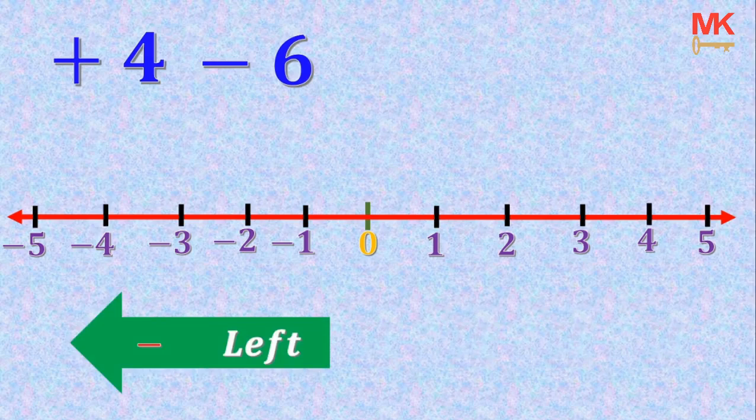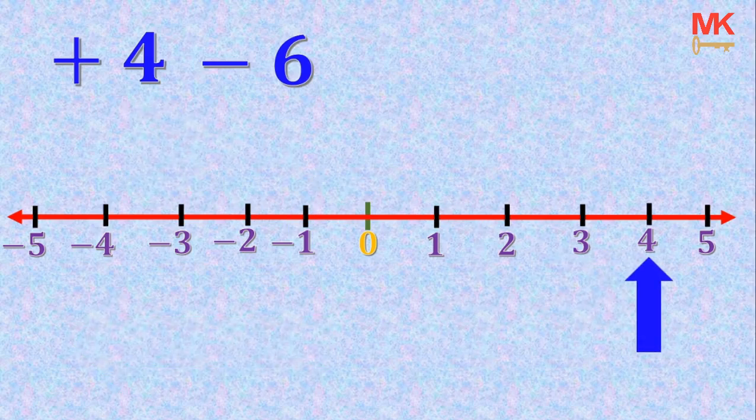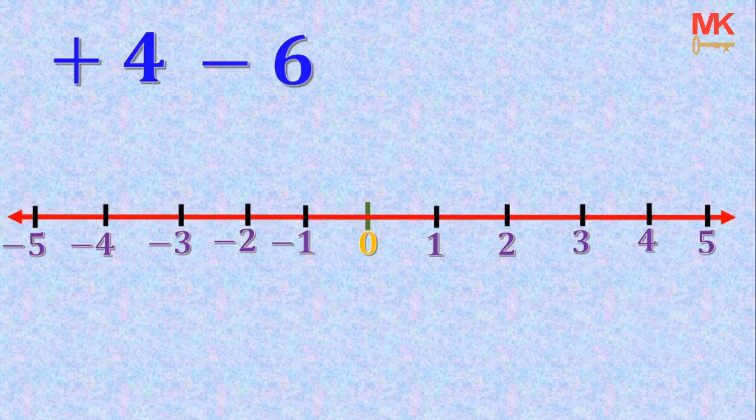What I'm just going to do is to locate the 4 on the number line and count 6 intervals to the left because we have a negative 6 right here. So let's get started.